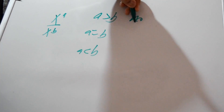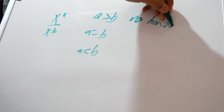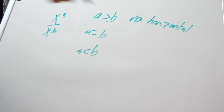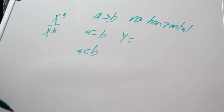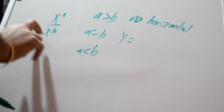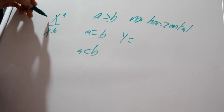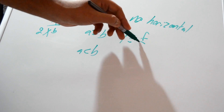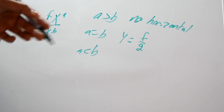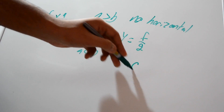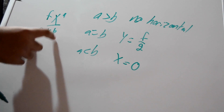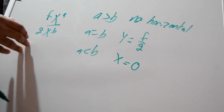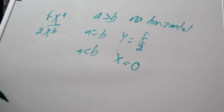When a equals b, there is a horizontal asymptote at y equals the ratio of the leading coefficients — we'll call them f and g — so y = f/g. When a is less than b, the horizontal asymptote is y equals zero, because the denominator becomes very large, and one over a very large number gives zero.